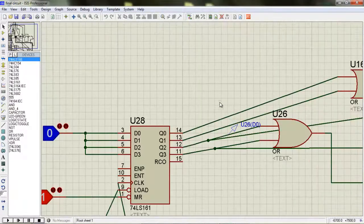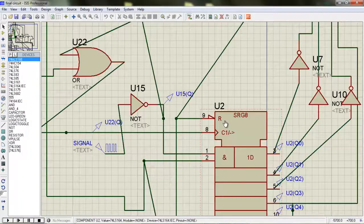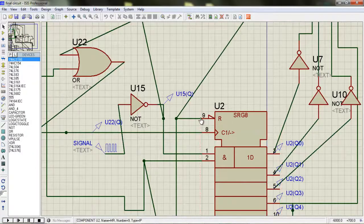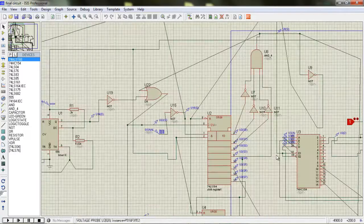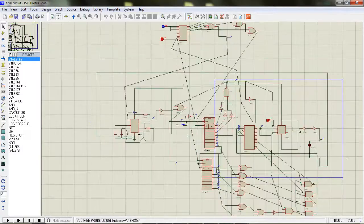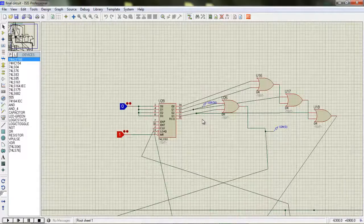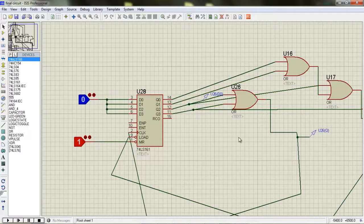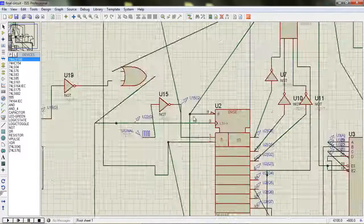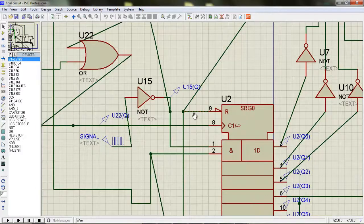At first when it counts 0, the reset button in the shift register gets 0 and it resets. That is, make all its outputs to 0. Then it goes to 1, 2, 3, and the shift register reset button goes to high 1.